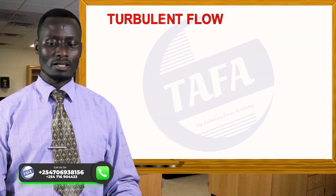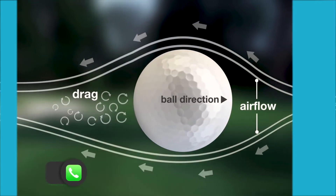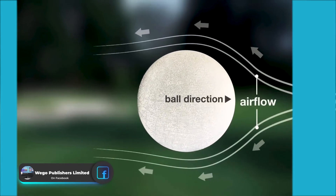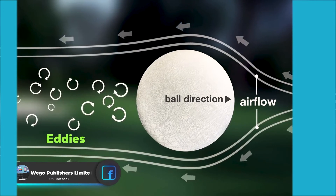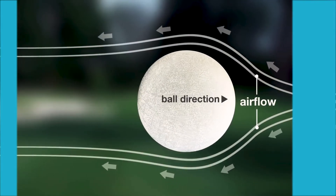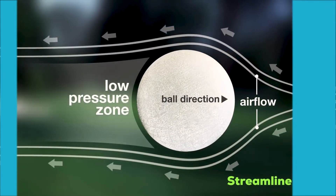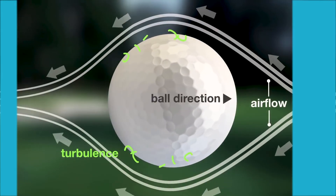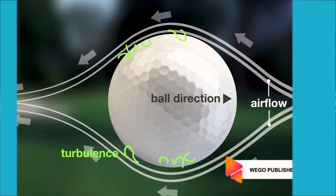Let us now look at turbulent flow. We have a ball moving through a fluid, and behind the ball — if the ball is moving to the left — behind the ball on the right, we see eddies forming. Therefore, in front of the ball on the left side is streamlined flow, but behind the ball on the right side we see a characteristic of turbulent flow because of the formation of the eddies.